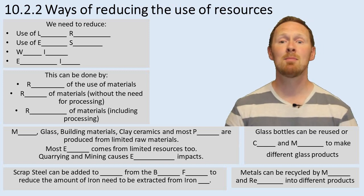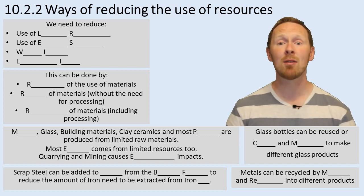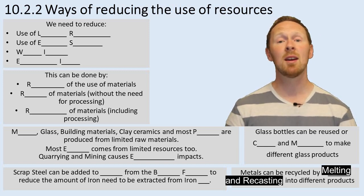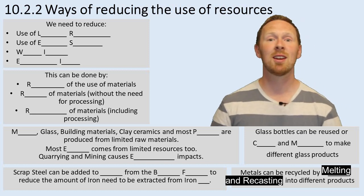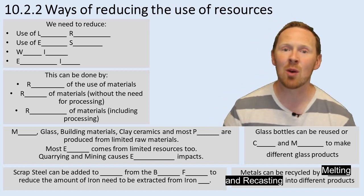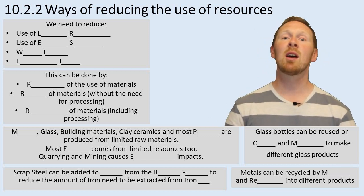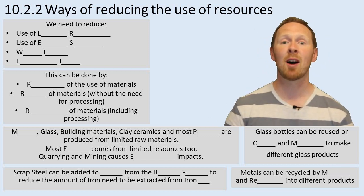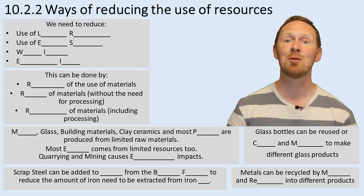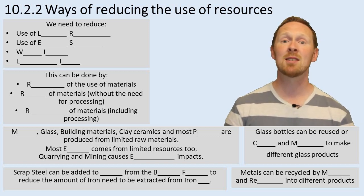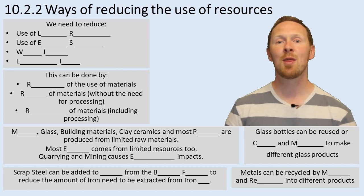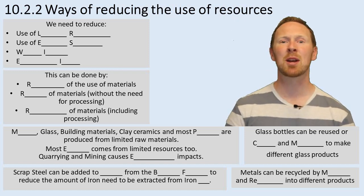Metals can also be recycled by melting and recasting them into different products. So all these ways are ways of reducing the use of resources, and with that we're allowing sustainable development — we're able to meet the needs of the current generation without jeopardizing the chances of future generations from meeting their needs. I hope this really helps you get your head around the ways we can reduce our use of resources.